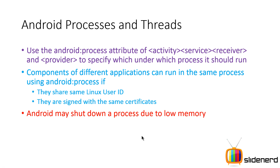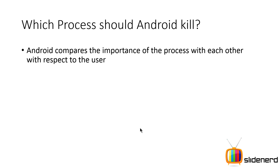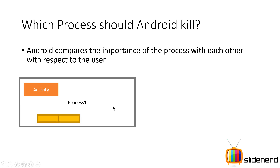If memory falls low, Android may shut down a process due to insufficient memory. This is rare these days since phones have lots of memory, but it still happens. So the next question is: which process should Android kill? Android compares the importance of processes with each other.